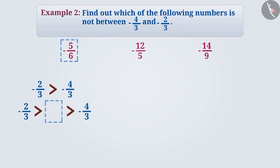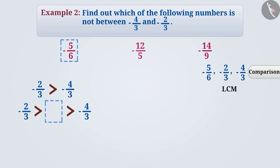To find out whether minus 5 by 6 is between minus 4 by 3 and minus 2 by 3, we need to compare these three rational numbers, for which we must make their denominators equal. To make the denominators equal, we use LCM. Here, the LCM of denominators 6, 3, and 3 is 6, so we will make the denominator of all three rational numbers 6.